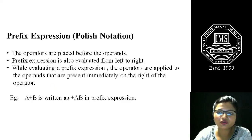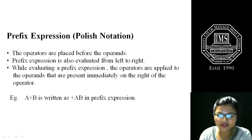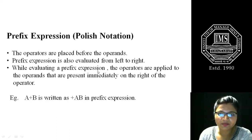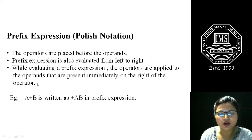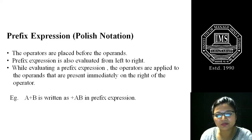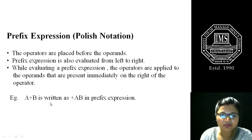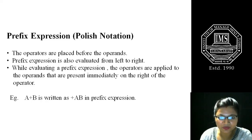The prefix expression is also called Polish Notation. In it, the operators are placed before the operands — first the operator, then the operands. It is also evaluated from left to right, but operators are applied to the operands immediately to the right of the operator. In postfix we write operand-operand-operator; in prefix we write operator-operand-operand. For example, A + B in prefix notation is written as + A B.